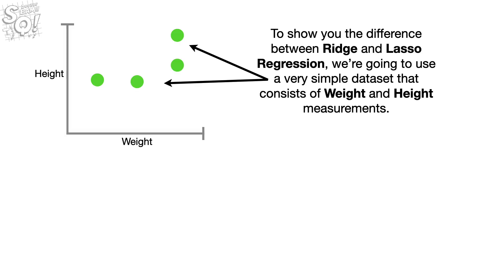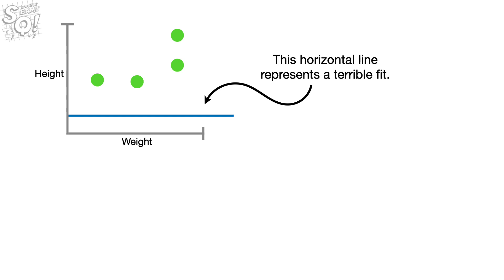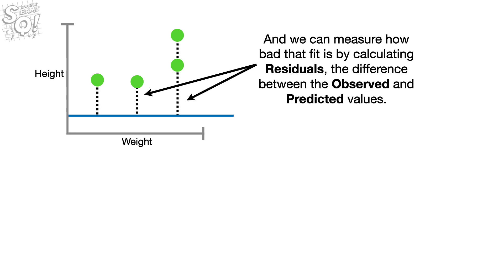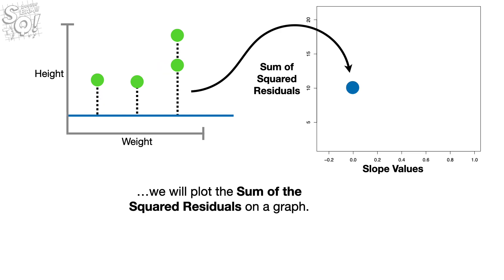To show you the difference between Ridge and Lasso Regression, we're going to use a very simple dataset that consists of weight and height measurements. We'll start by fitting a horizontal line to the data. This horizontal line represents a terrible fit, and we can measure how bad that fit is by calculating residuals — the difference between the observed and predicted values. In order to compare lines, we will plot the sum of the squared residuals on a graph.